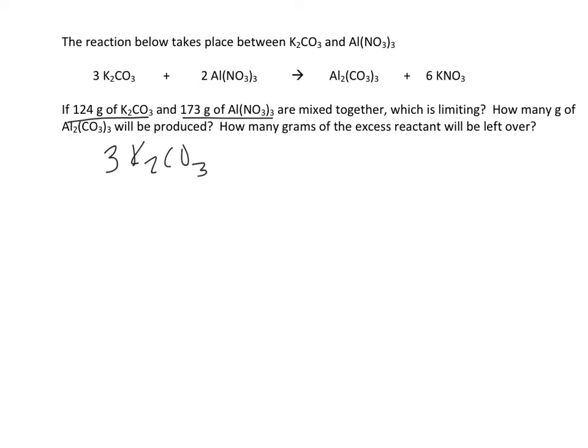Include the coefficients. So 3 K2CO3 plus 2 Al(NO3)3 makes Al2(CO3)3 plus 6 KNO3. I really want to write this across. And on the left column, I want to write I-C-E, ice.